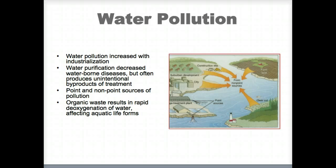Nitrogen has become a source of pollution over the last 50 years. Fertilizers enrich soil with ammonium nitrate because plants can use ammonia as a direct nitrogen source for their metabolism. Plants also excrete nitrates that, in addition to the unused nitrate in the fertilizer, run off into groundwater.